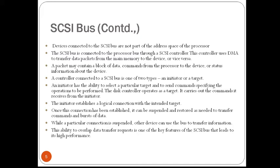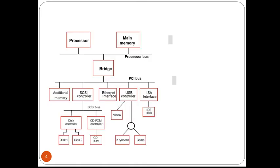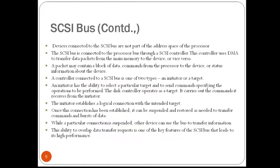Devices connected to the SCSI bus are not part of the address space of the processor in the same way as devices connected to the processor bus — the address space of this bus will be different. The SCSI bus is connected to the processor bus through a SCSI controller, as shown in figure 4.38 from the textbook. This controller uses DMA, that is direct memory access, to transfer data packets from the main memory to the device or vice versa. A packet may contain a block of data, commands from the processor to the device, or status information about the devices.